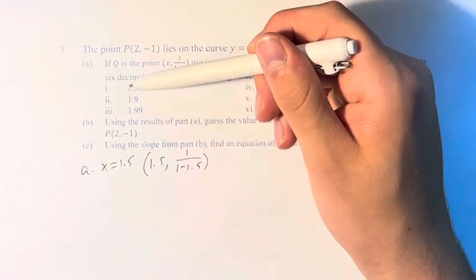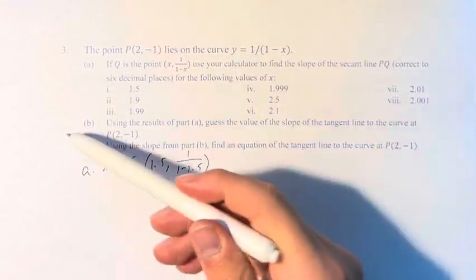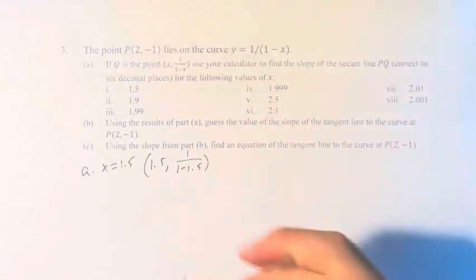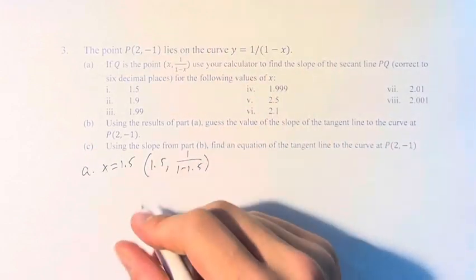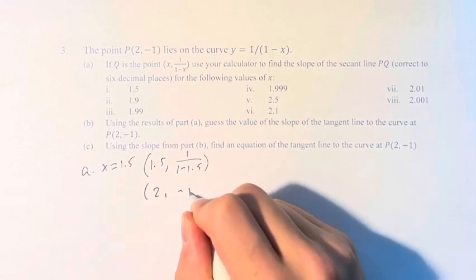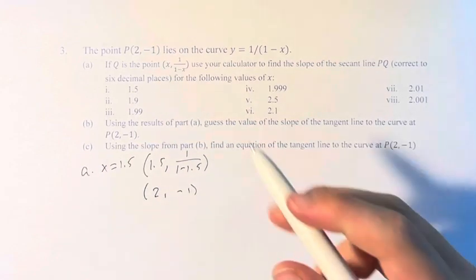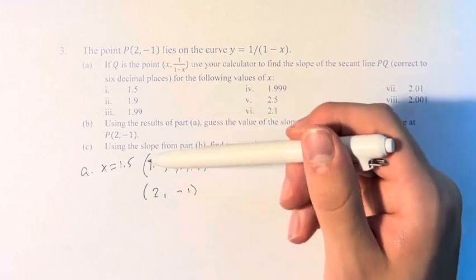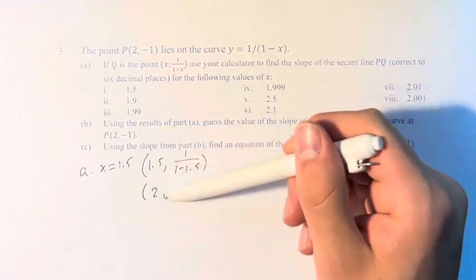These are all just different examples where we're plugging in some value for x to get Q. So we have this point and the point (2, -1). What we have to do is find the slope of the line that goes between these two points.